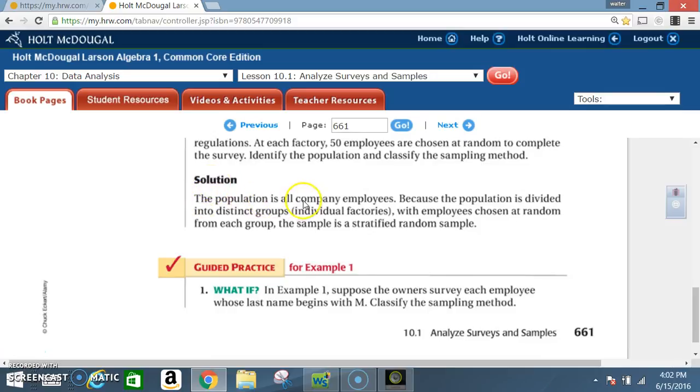Solution: The population is all company employees. Because the population is divided into distinct groups, individual factories, with employees chosen at random from each group, the sampling is a stratified random sample.